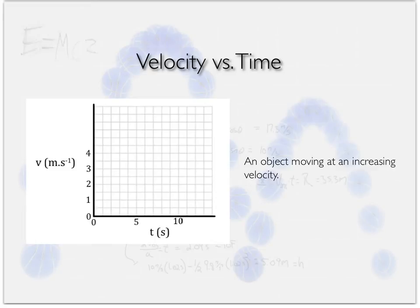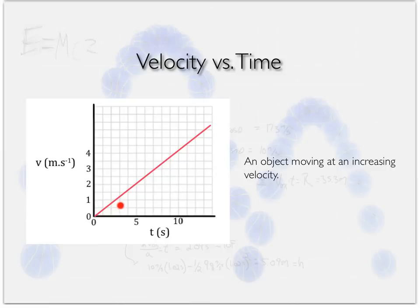An object moving at an increasing velocity: for most high school assumptions we keep acceleration constant, so the graph is a straight line rising with time — not a curve. If you plotted a straight line going up, you win. Velocity increases as time passes at a constant rate. Displacement-time graphs are way more complicated than velocity-time graphs — I'm sure you've picked that up.